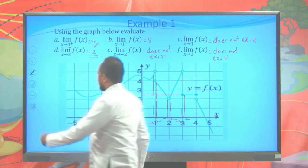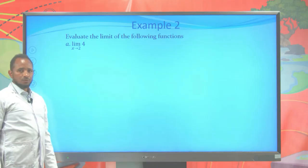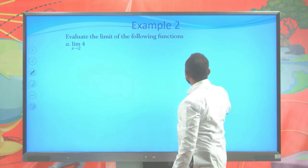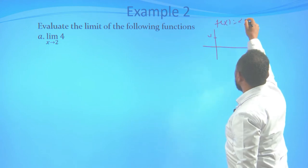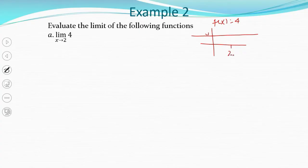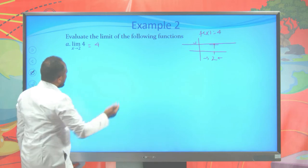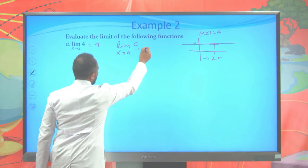Now let's continue. The limit of 4 when x approaches 2 - this is a constant function. If you draw the graph of this function, y equals 4 is a constant function. When you approach from the right and from the left of 2, the functional value approaches 4. Therefore, the limit of 4 when x approaches 2 is 4. Generally, for any constant function, the limit of constant c when x approaches any number a will always be the constant c.